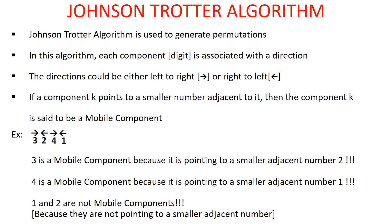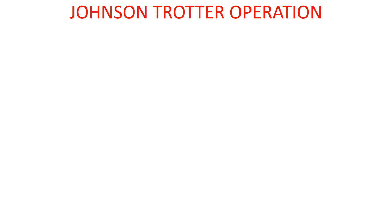To understand the Johnson-Trotter operation, we should be very clear with the concept of mobile component. It is quite easy — you should be able to identify which is a mobile component and which is not. The operation is very important — in any algorithm, first you should be thorough with the operation, then the algorithm naturally follows.